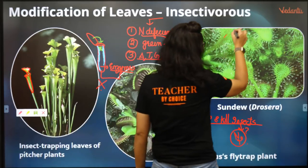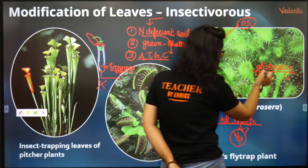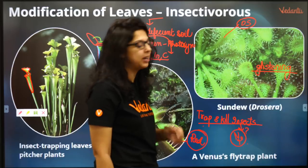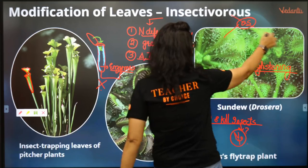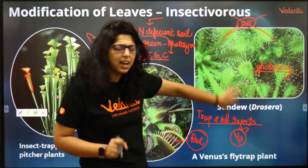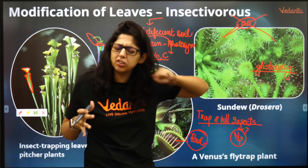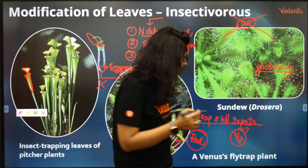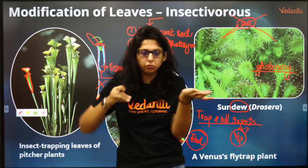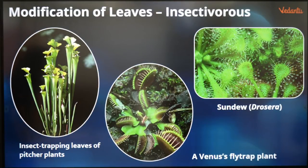Sundew (Drosera) - this looks like dew drops, it glistens. Like glistening teeth in a Colgate ad - it shines. But it's not dew, it's a gel. Once an insect lands on it, it gets stuck. When sunlight falls on it, it shines even more, attracting insects. Shining attracts insects, they come, and then the insect dies. So sundew, Venus flytrap, pitcher plant, and Nepenthes are all very important.